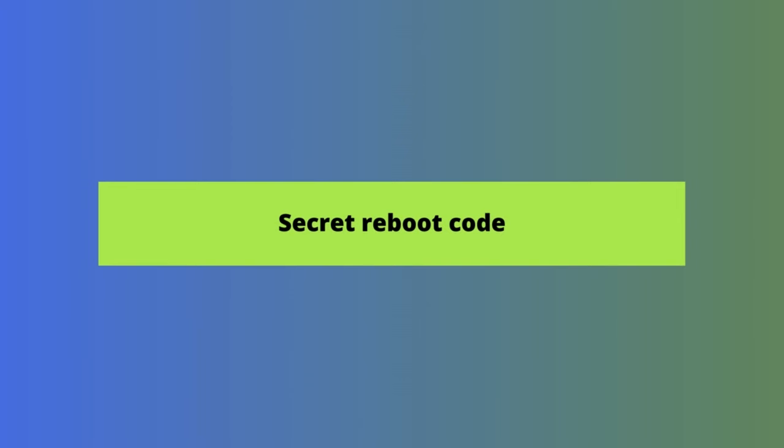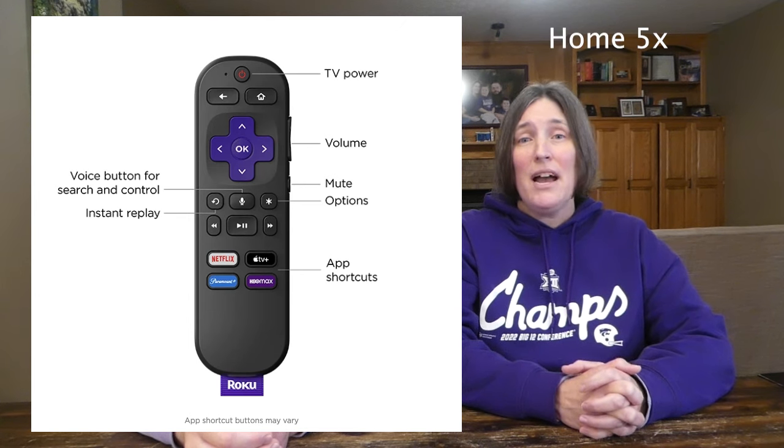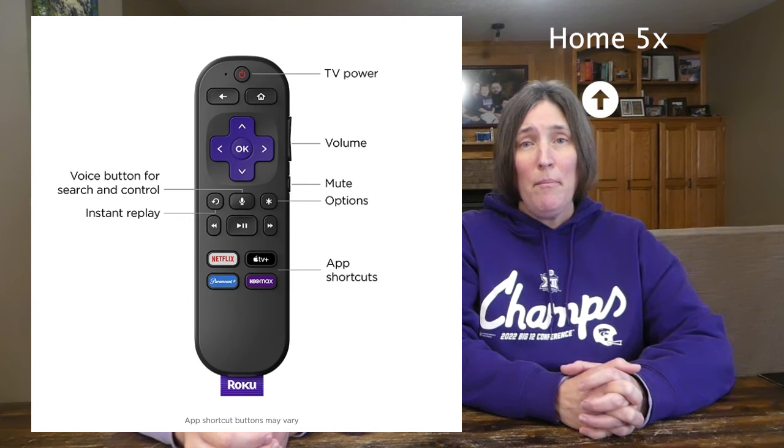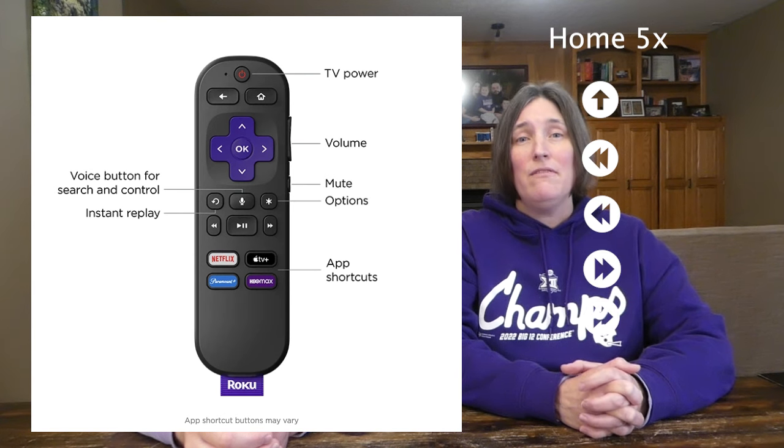Now let's look at one final hidden Roku menu — and it's really not a menu so much as a secret reboot code. This setting is helpful if you want to quickly restart your Roku device without unplugging it from the TV and power source. You won't see anything on screen when you use this code; your Roku will just automatically begin a reboot sequence. To access this hidden setting, press the home button on your remote five times, then press up, rewind, rewind, fast forward, fast forward.